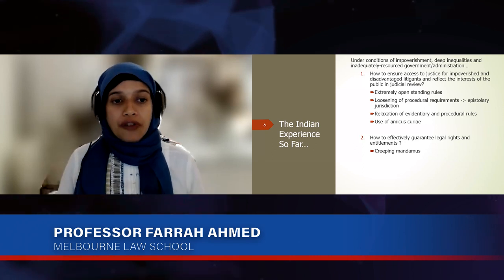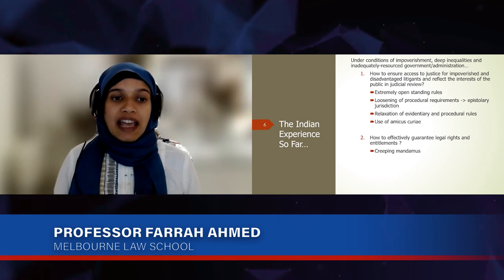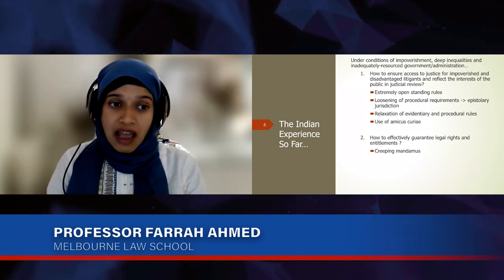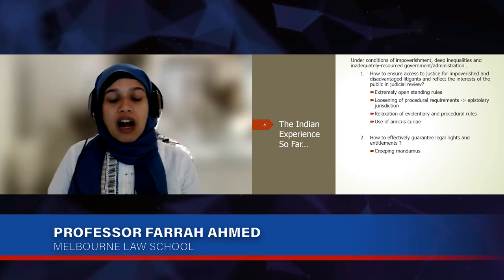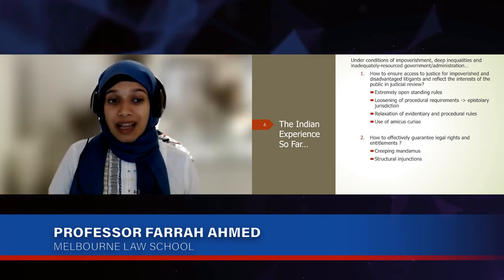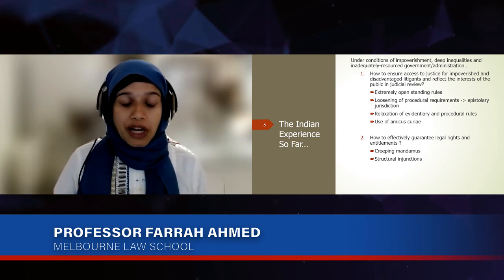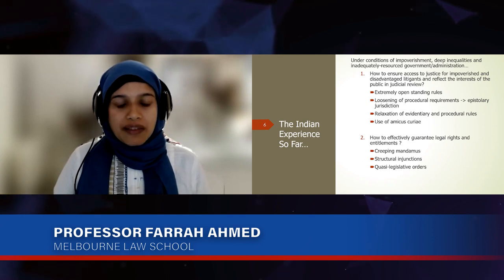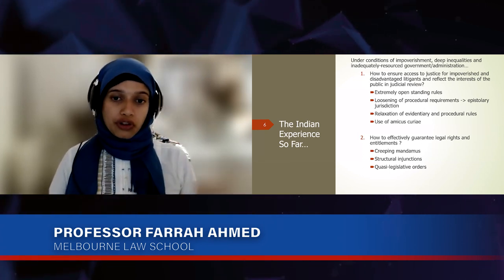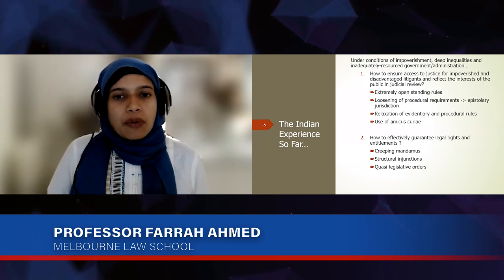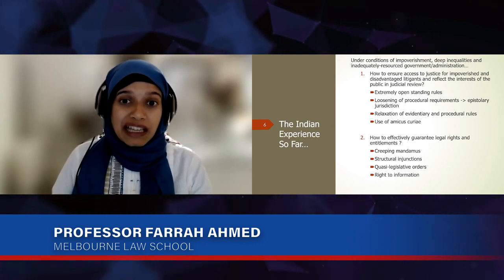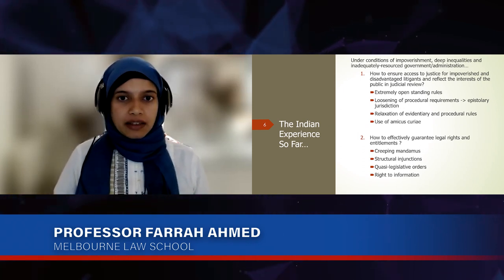On the second question of how to effectively guarantee legal rights and entitlements, there have been a number of legal innovations. One is what we call creeping mandamus — a kind of remedy I'll talk about. There are also remedies called structural injunctions, and a kind of remedy I'm describing as quasi-legislative orders — this is not what the court calls them, but the term I give to them. I also want to talk about the importance of the right to information in effectively guaranteeing legal rights and entitlements in India.